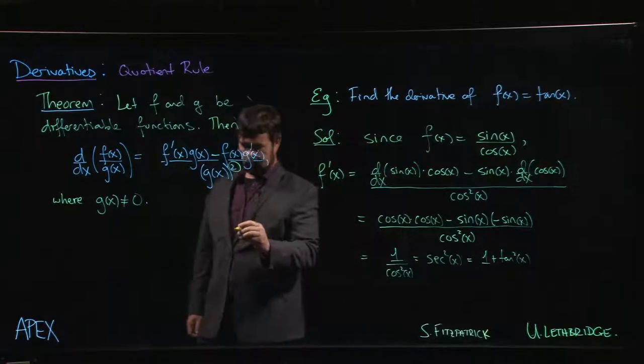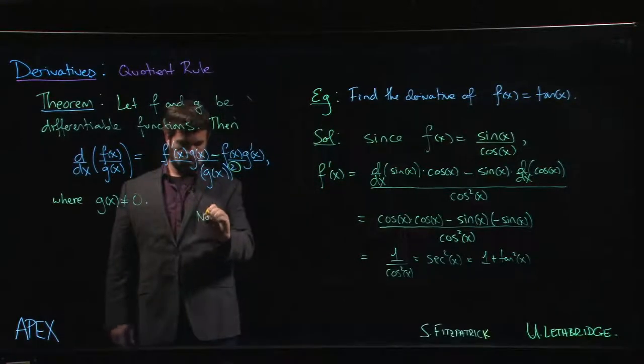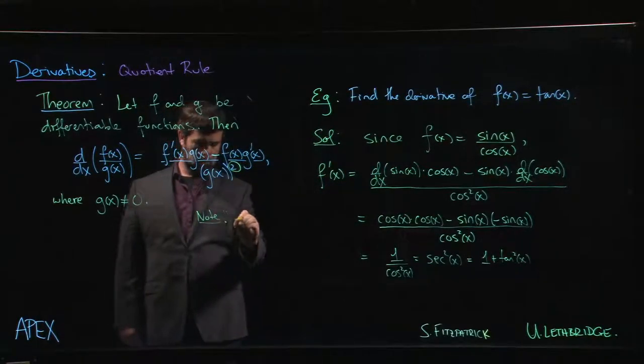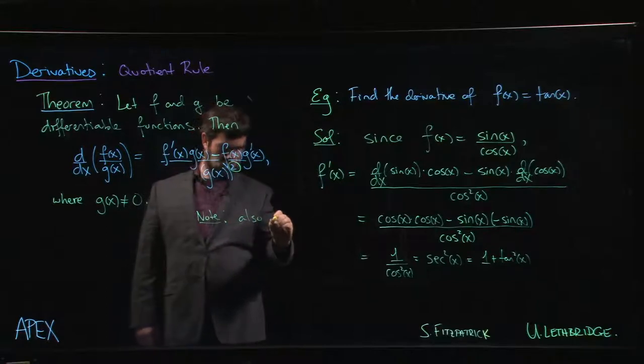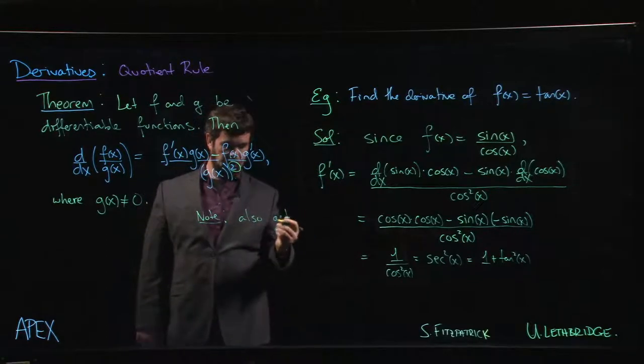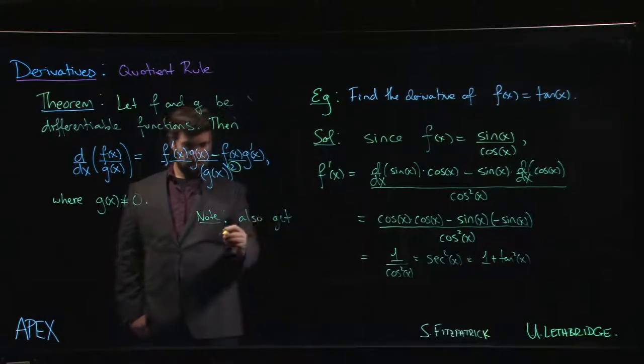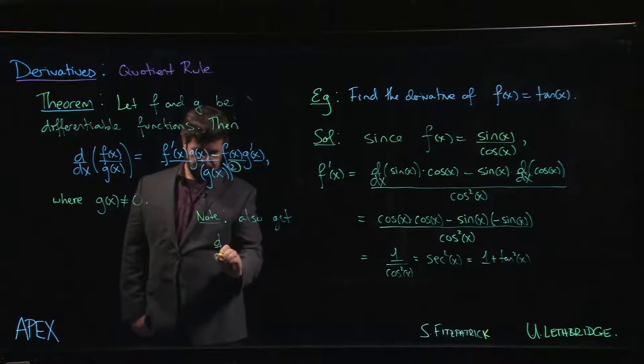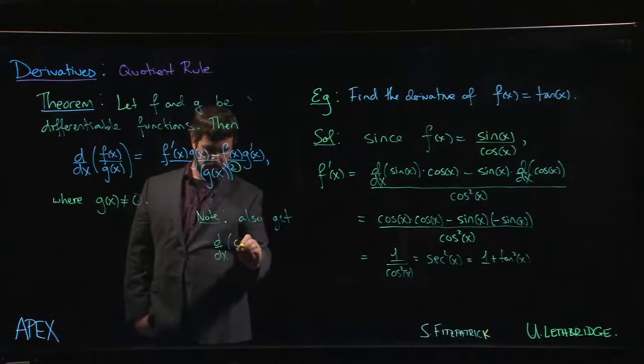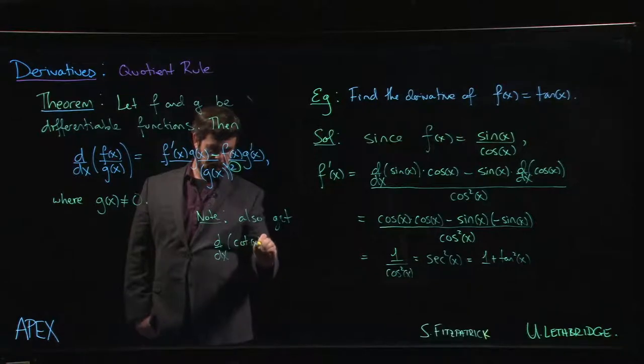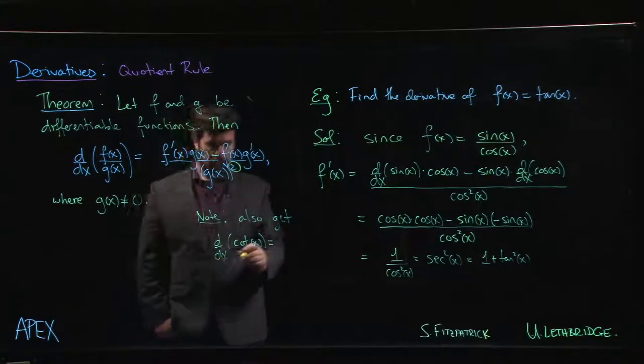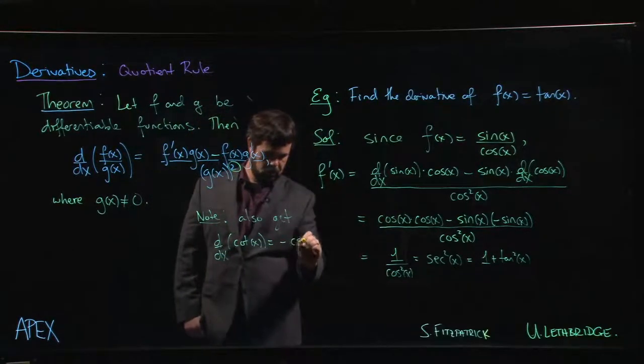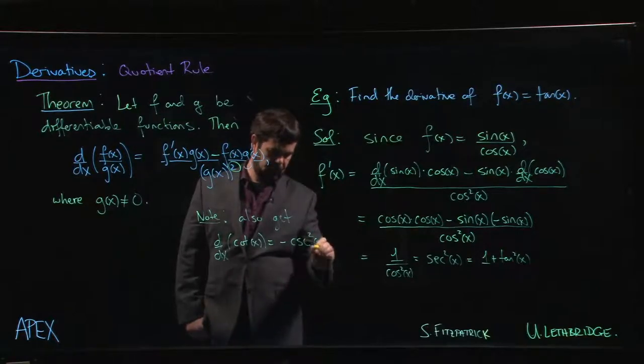Similarly, and it's a good exercise for you to try to do these things, you can also show that the derivative of the cotangent function is minus cosecant squared x.